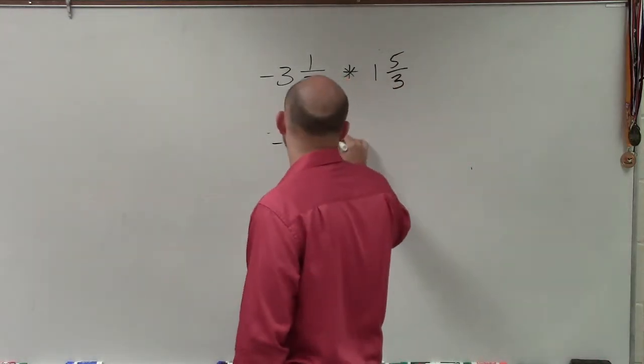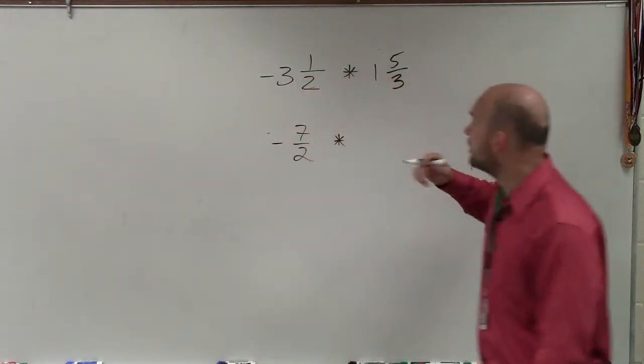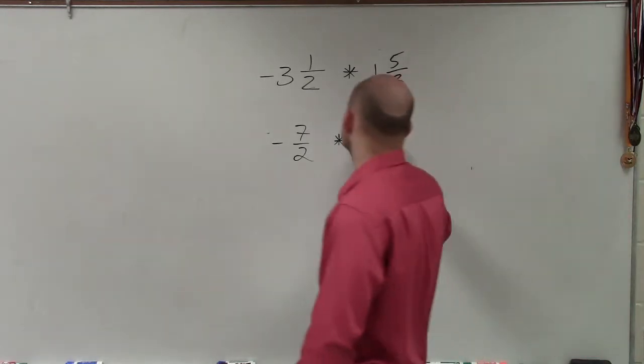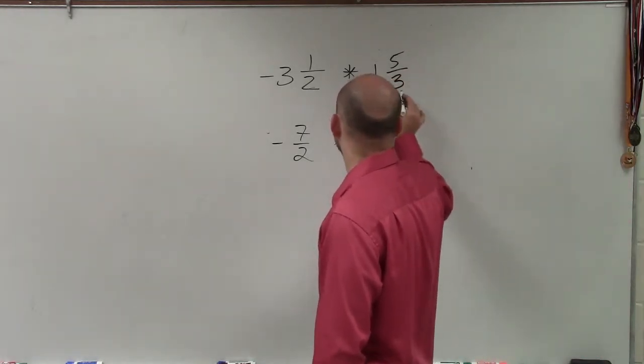So it's negative 7 halves times, 3 times 1 is 3, plus 5 is 8, over 3.